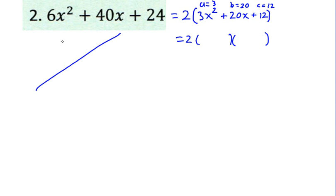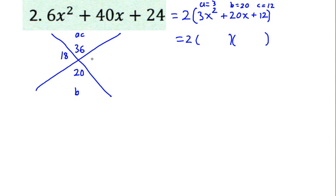In the x or bottoms-up method, we put ac on top — a times c is 3 times 12, or 36 — and b on the bottom, which is 20. So we're looking for two numbers which when multiplied together equal 36, but when added together equal 20. Factors of 36: how about 6 and 6? 6 plus 6 is 12, won't work. How about 12 and 3? 12 plus 3 is 15, won't work. How about 18 and 2? 18 plus 2 is 20 — that works. So our two numbers are 18 and 2, and we divide by a, which is 3.